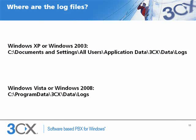3CX Phone System records its log files inside C:\Documents and Settings\All Users\Application Data\3CX\Data\Logs for Windows XP and Windows 2003 Server operating systems. In cases when a verbose log file becomes too large and needs to be rolled over, the logger will move the file into the backup subfolder of the log files path and will create a new file for current logging.